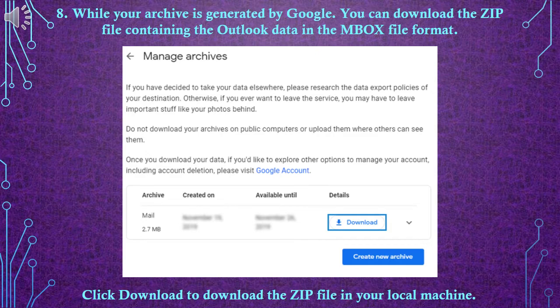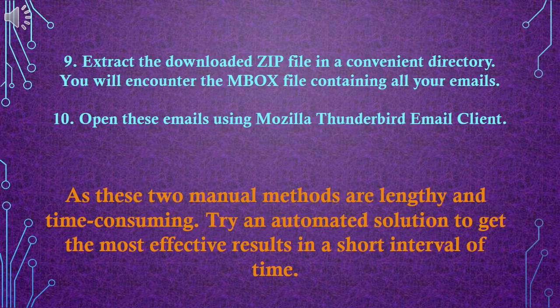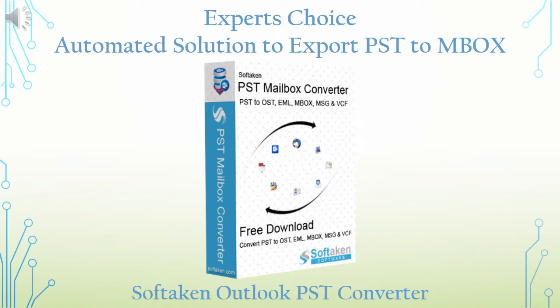Step 9: Extract the downloaded zip file in a convenient directory. You will encounter the mbox file containing all your emails. Step 10: Open these emails using Mozilla Thunderbird Email Client. As these two manual methods are lengthy and time consuming, try an automated solution to get the most effective results in a short interval of time.